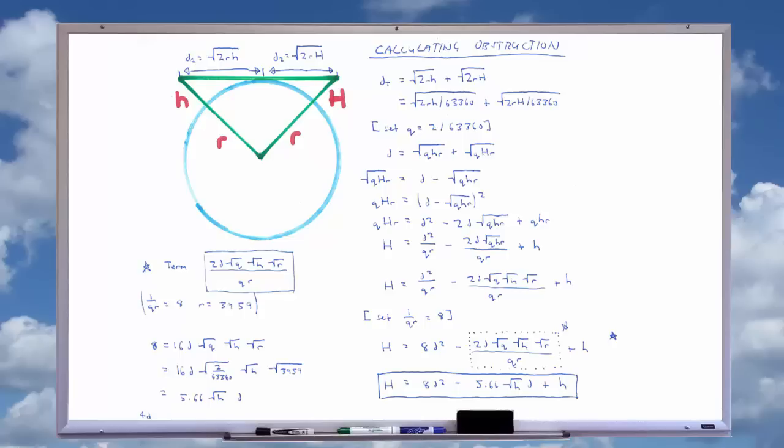Because both of the terms on the right hand side are dealing with miles, we can divide by 63,360 to convert miles into inches. Now we can set a new value q to equal 2 over 63,360 to make the equation simpler. Then sub q into the equation, subtract sqrt(qhr) from both sides, square both sides, expand the brackets on the right hand side.